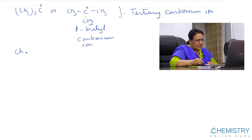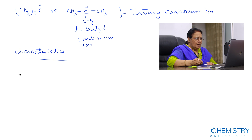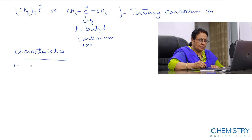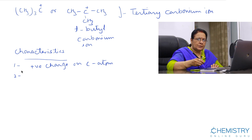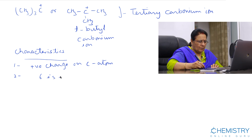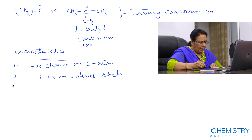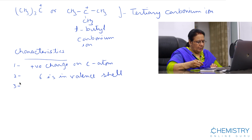Now we will discuss the characteristics of carbonium ions. First, the carbon atom of a carbonium ion carries a positive charge. Second, the carbon atom carrying the positive charge has only six electrons in its valence shell. Third, the positively charged carbon atom of a carbonium ion is in the sp2 hybridization state.